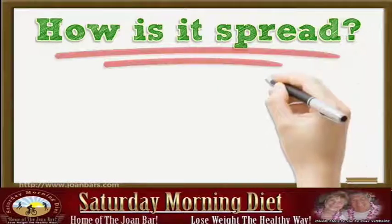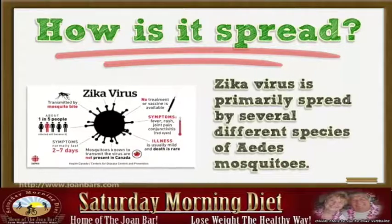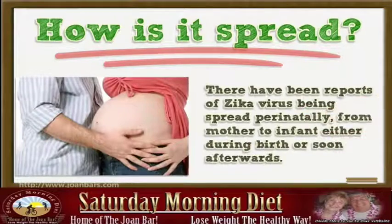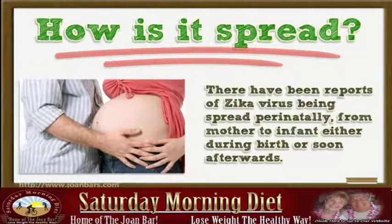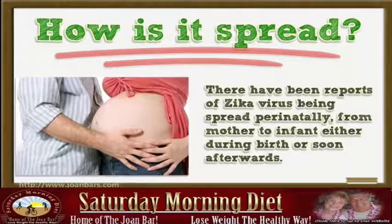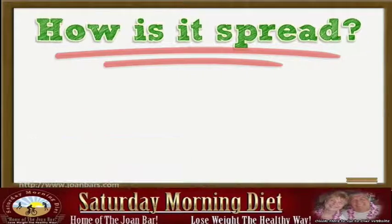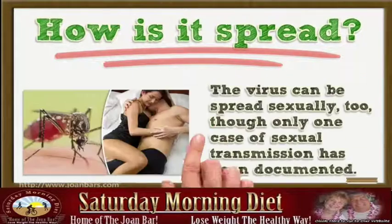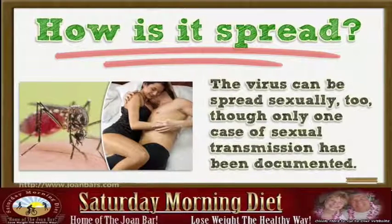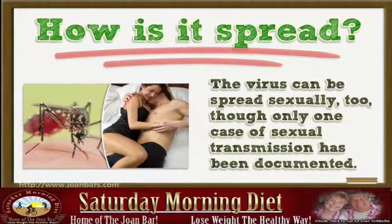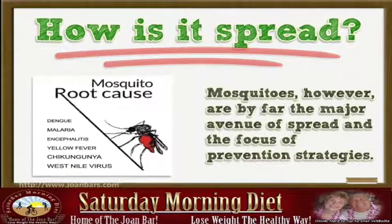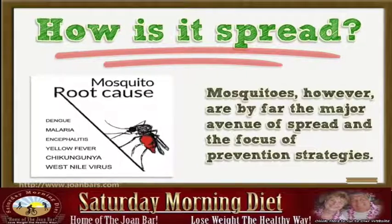How is it spread? Zika virus is primarily spread by several different species of Aedes mosquitoes. There have been reports of Zika virus being spread perinatally, from mother to infant either during birth or soon afterwards. Authorities also worried that it might be spread via blood transfusions. The virus can be spread sexually too, though only one case of sexual transmission has been documented. Mosquitoes, however, are by far the major avenue of spread and the focus of prevention strategies.